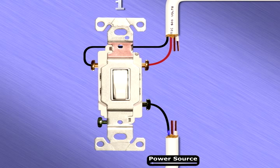The current will either try to pass to the traveler screw on the left or the traveler screw on the right. In our example, since the switch is in the down position, the current passes to the traveler screw on the left and will then try to travel along the black traveler wire until it reaches the second switch.